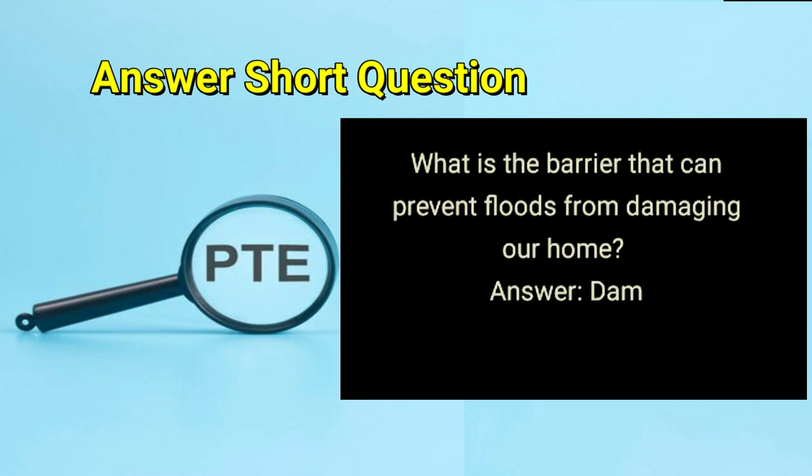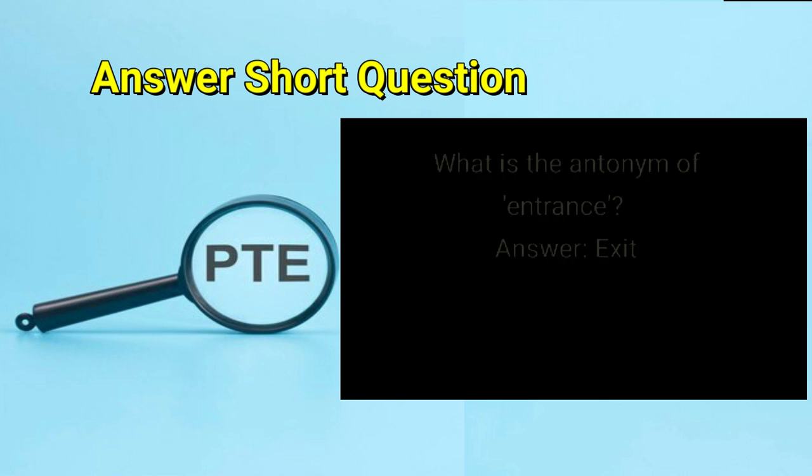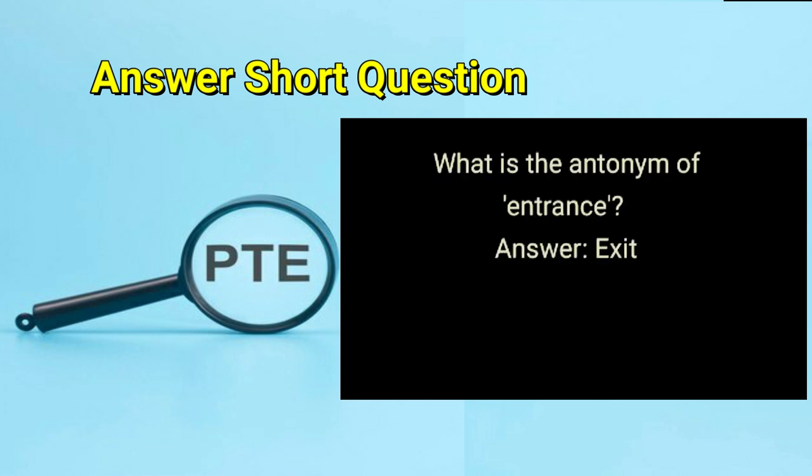What is the barrier that can prevent floods from damaging our home? Answer: dam. What is the antonym of entrance? Answer: exit.